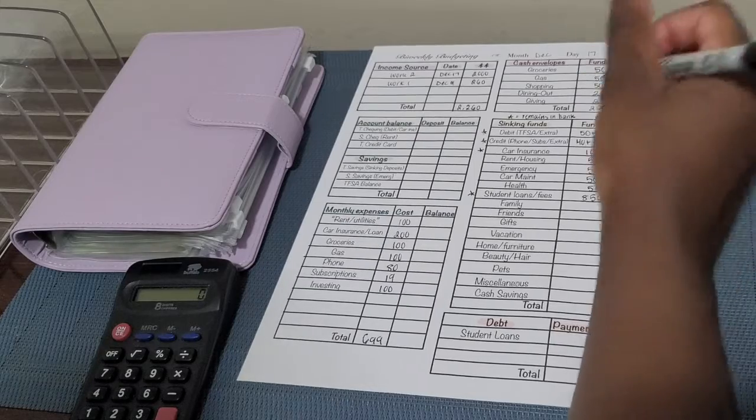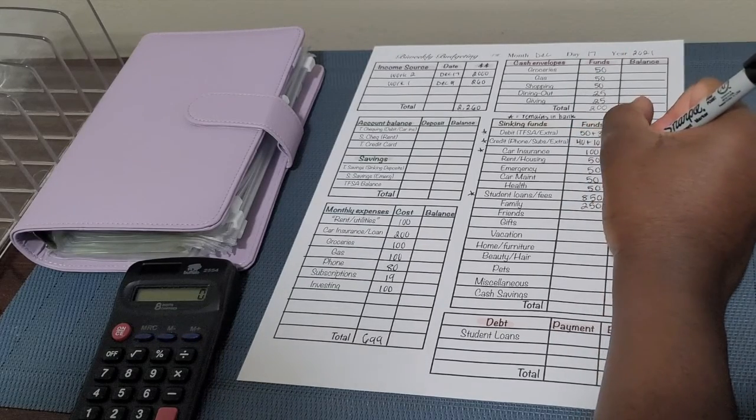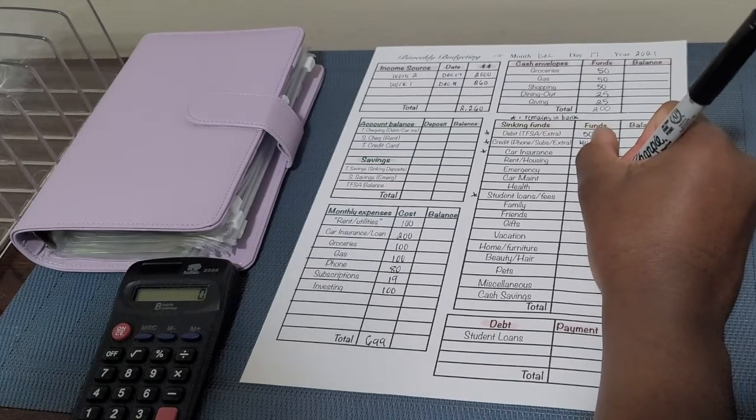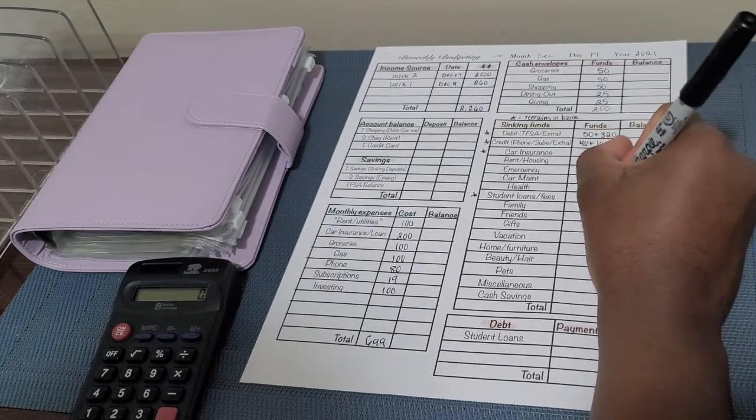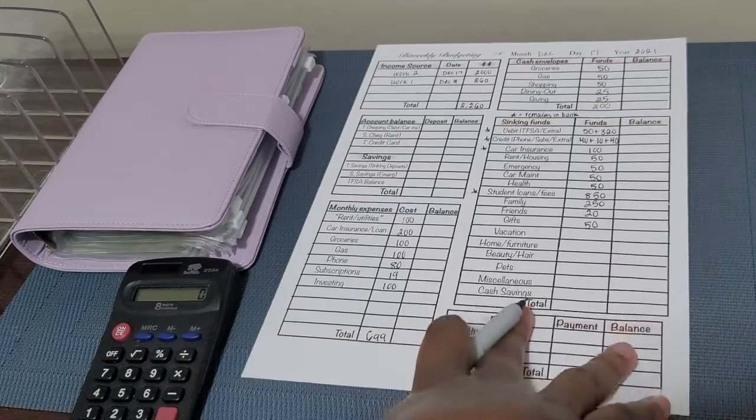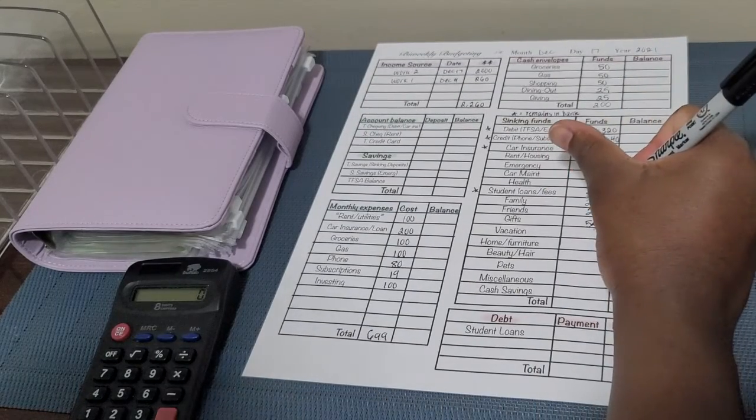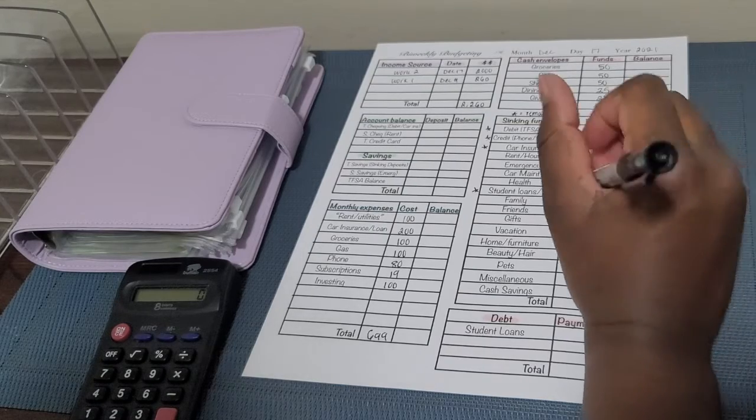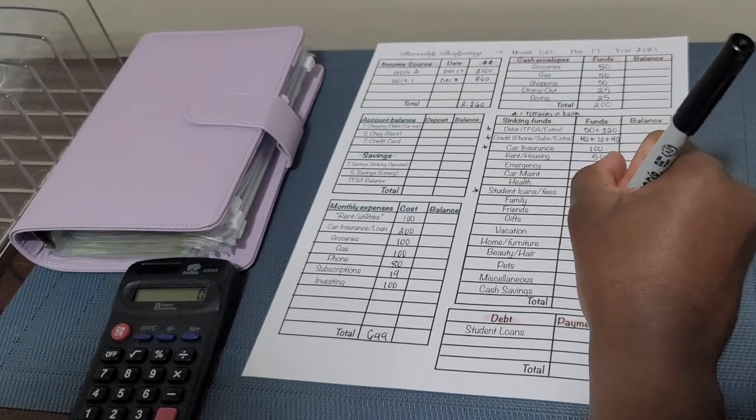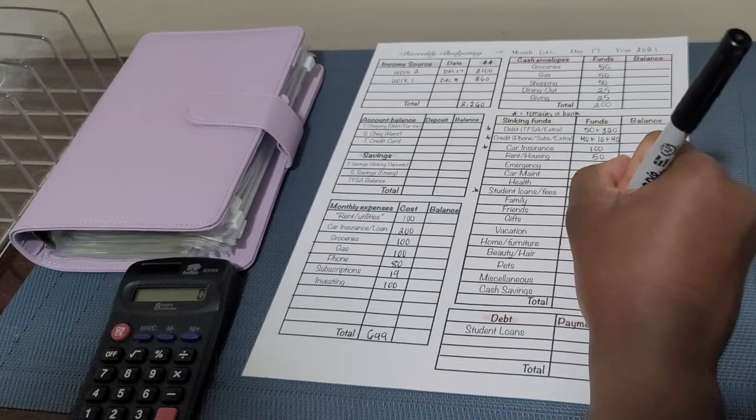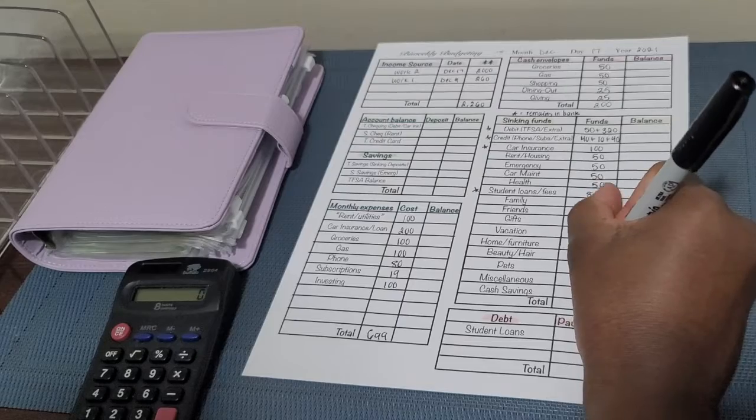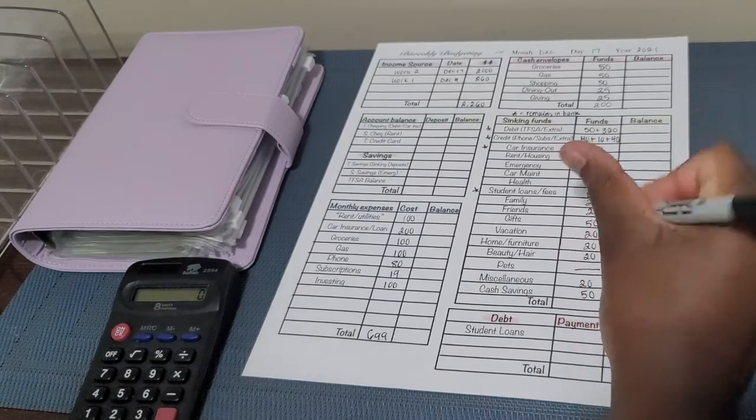Family gets the usual $250. Friends $20. Gifts I still am giving $50 because I still have one more thing I want to get. Vacation $20, home and furniture $20, beauty and hair $20. Pets isn't going to get anything this time. Miscellaneous $20 and cash savings is $50.